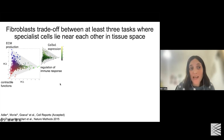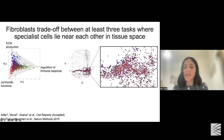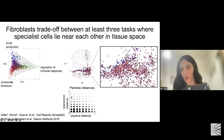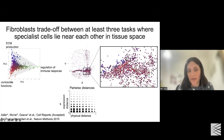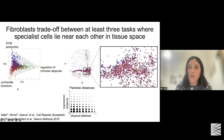Since this is spatial transcriptomic data, we can look at how these cells are arranged in tissue space. When we zoom into the tissue slide, we don't see specific regions of certain archetypes — instead we see a mixture of archetypes. Using our pairwise distance method to quantitatively define this, we indeed see no correlation. In fact, archetypes that are far in expression space tend to be close to each other in tissue space. Looking at these patterns, we can see that fibroblasts do not show a pattern that agrees with an external gradient, and so we wanted to further test whether they use cell-cell interactions to take on these different functions.